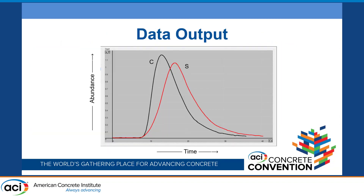What you get is abundance measured through your infrared sensors on the left-hand side and time on the right-hand side. As you heat up the sample, you start to see the carbon and the sulfur leaving the sample. The infrared sensor quantifies how much there is with time, and at the end it gives you a quantity.